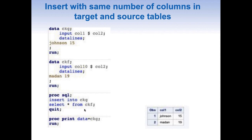Now that we have inserted one row from CKF into CKG, we can PROC PRINT the data of CKG. You can see in the result that the row is inserted — we now have two rows: the initial row and the newly inserted row.